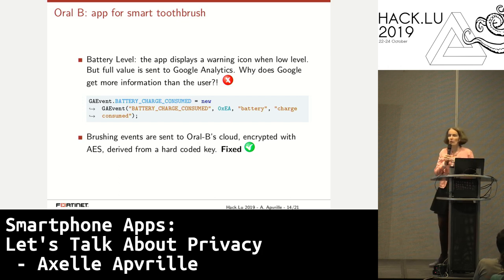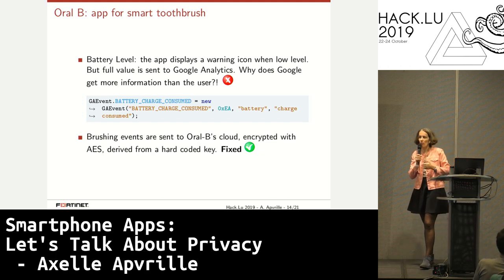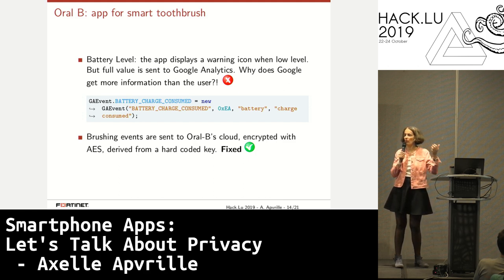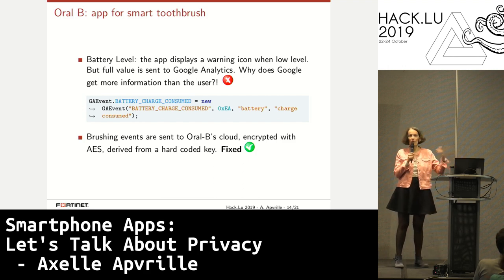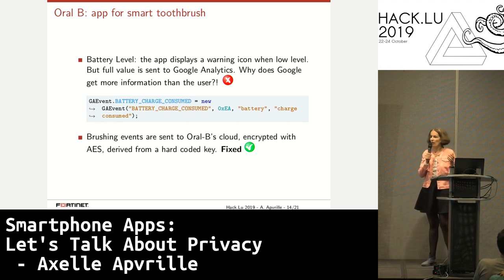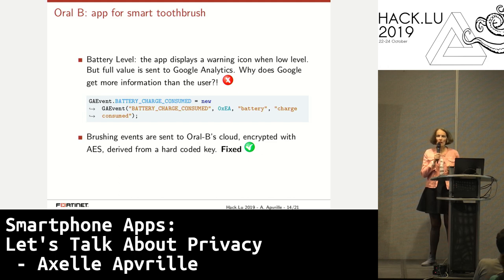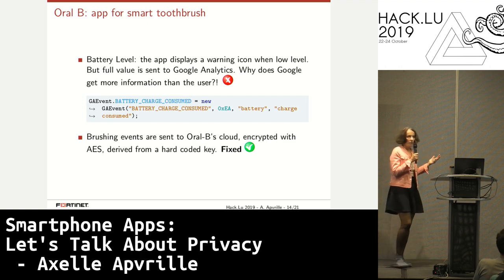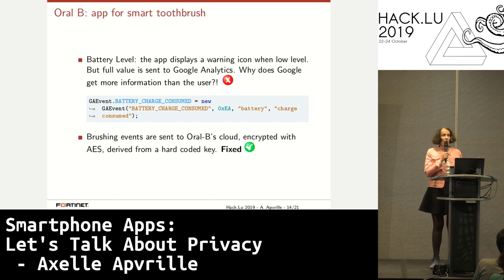Oral-B — I already told you the application is extremely big. There's another issue: you've got a connected toothbrush with a battery, and the smartphone app will tell you when the battery is running low, like below 10%. What's a little bit strange is that Google Analytics actually knows more than that and has the full report — Google gets all the notifications: end user is down to 60%, then 50%, then 40% battery. In that particular case, Google Analytics knows more about your toothbrush battery than yourself. I find that a bit strange.